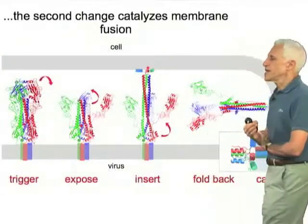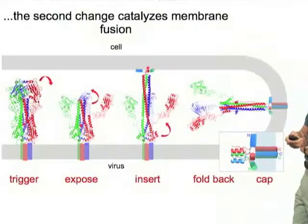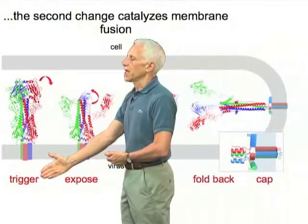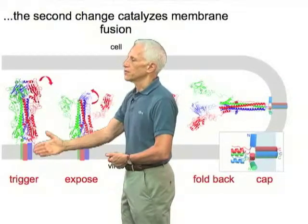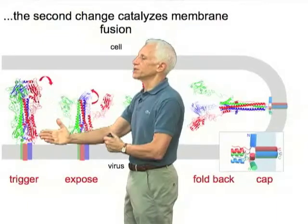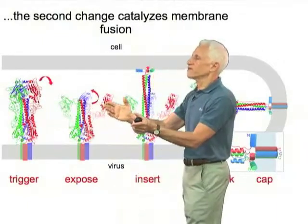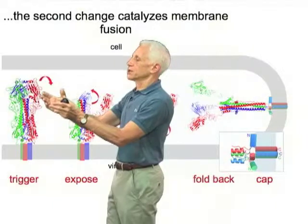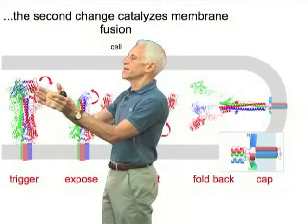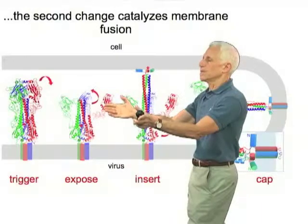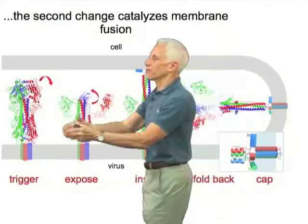The fusion of membranes by influenza virus can be thought of as a triggering process — we don't show the sialic acid attachment here — but a triggering process that leads to dissociation of the HA1 domains at the top. There happens to be a disulfide bond down here that keeps HA1 from actually floating away. But some experiments done nearly 20 years ago showed that if you knit the tops together, then this process can't occur. So we know that this dissociation of the tops from the stalk occurs.